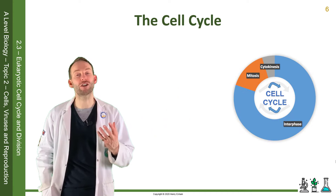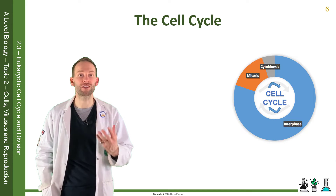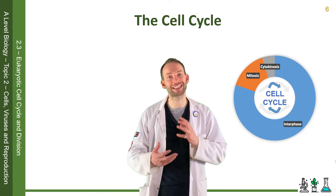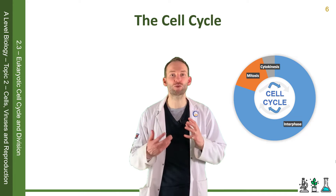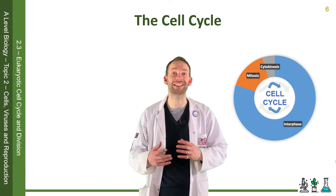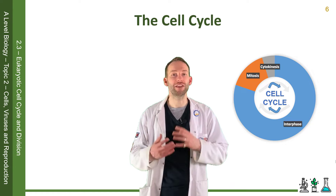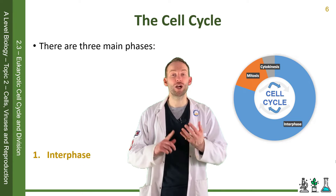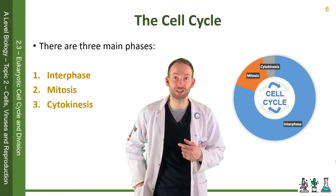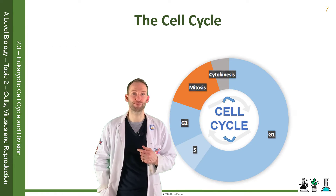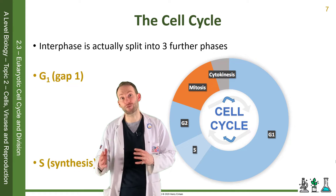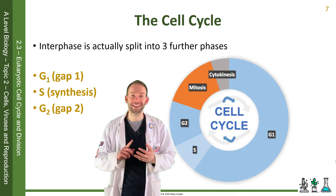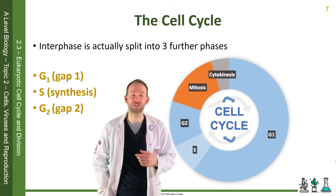When a cell divides, it goes through the cell cycle. Depending on the type of cell in the organism, it can take anything from about 24 hours to a few years for the cycle to happen. There are three main phases: interphase, mitosis, and cytokinesis. We can split interphase into three further phases: G1, S, and G2.